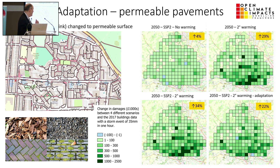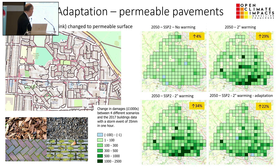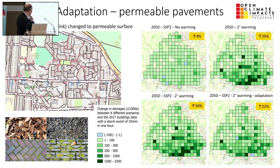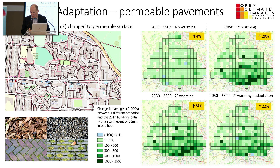If we introduce climate change: the top-left panel shows SSP2 with no climate change, but moving across to the furthest panel for 2050 with climate change, there's a much bigger effect — a 29% increase in damages compared to a 4% increase just due to new build in SSP2. Put them together, it's 34%. As an illustration of adaptation, if you changed all pavements to a permeable surface through building regulations over time, damages go up only about 22% — so you haven't ameliorated all damages, but that change has had a significant effect.